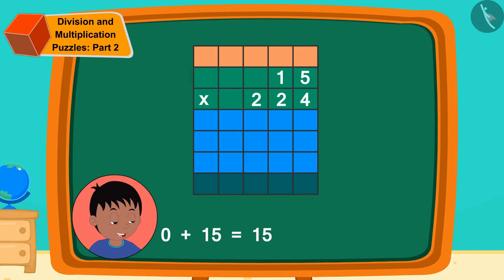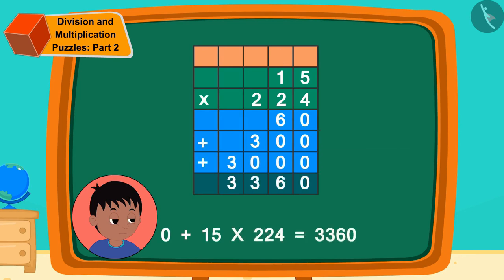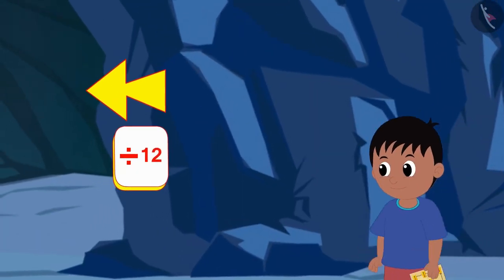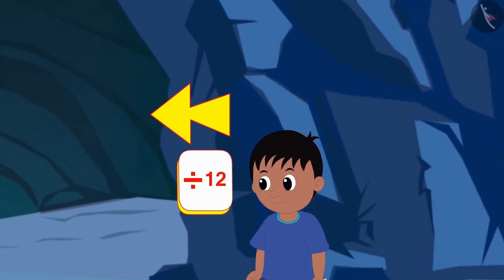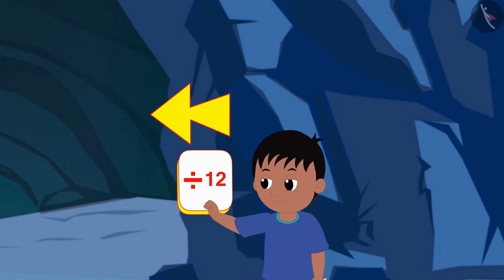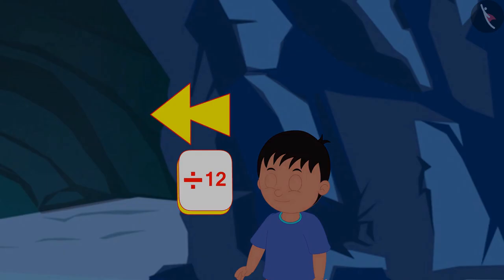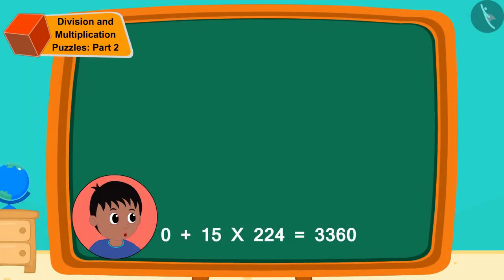Now after walking some distance Raju saw this symbol. So far I have got 3360 as the answer and on this symbol it says divide by 12. That means I have to divide 3360 by 12, thought Raju. He quickly found the answer to the division in this way: 280.